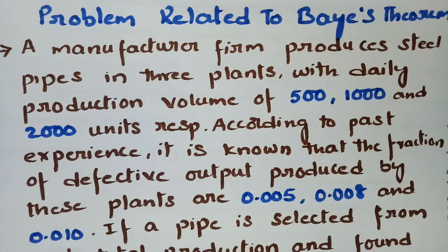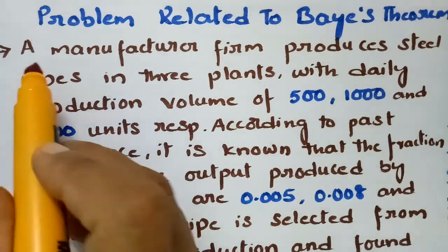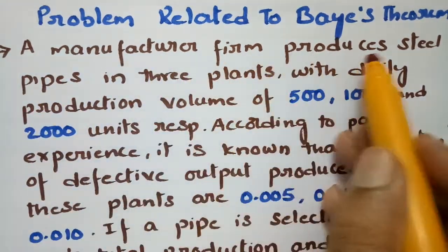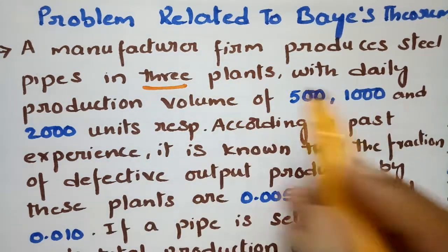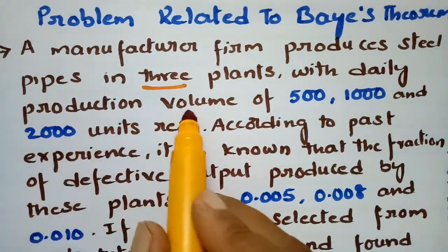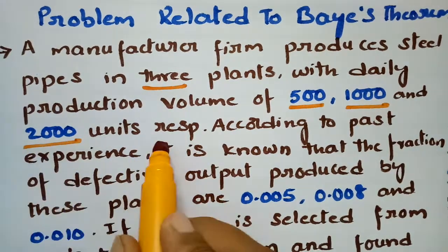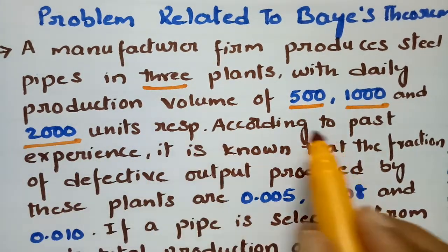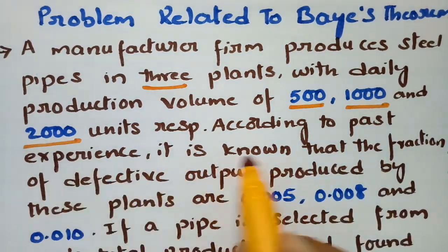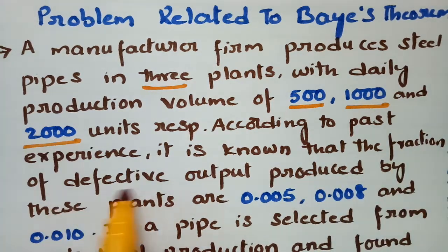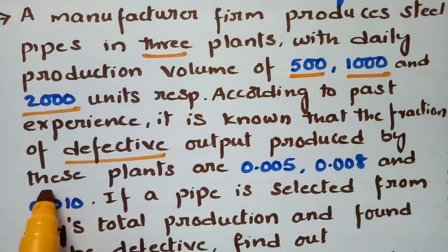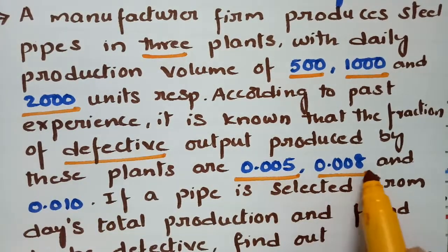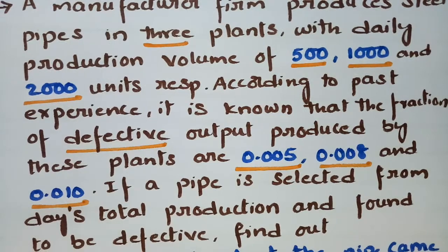This problem is related to Bayes' theorem. A manufacturer firm produces steel pipes in three plants with daily production volumes of 500, 1000, and 2000 units respectively. According to past experience, the fraction of defective outputs produced by these plants are 0.005, 0.008, and 0.01.